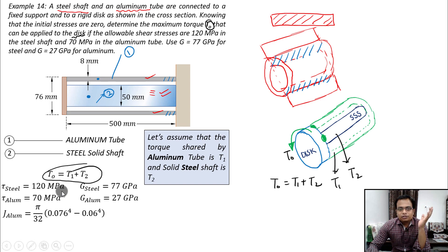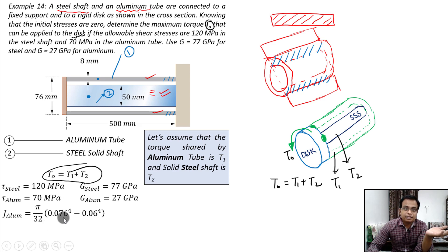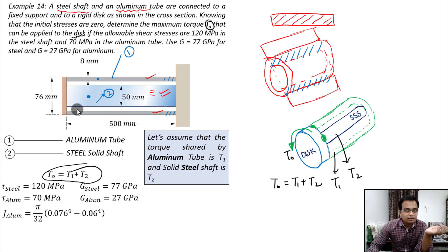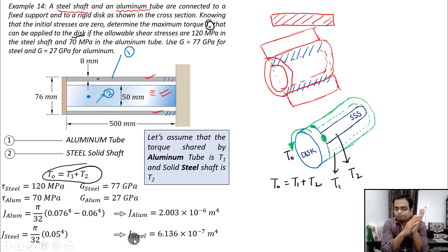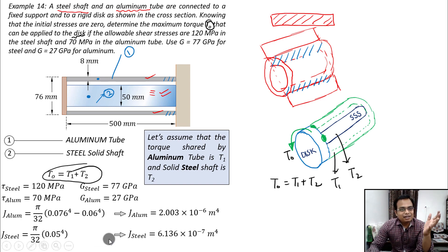To proceed, calculate the polar moment of inertia J for both the tube and the solid shaft. For the tube: outer diameter is 76 mm, inner diameter is 76 minus 16 = 60 mm, so 0.06 m. For the solid shaft: J = π/32 × d⁴, where d = 50 mm. Let's arrange all the given and calculated values.